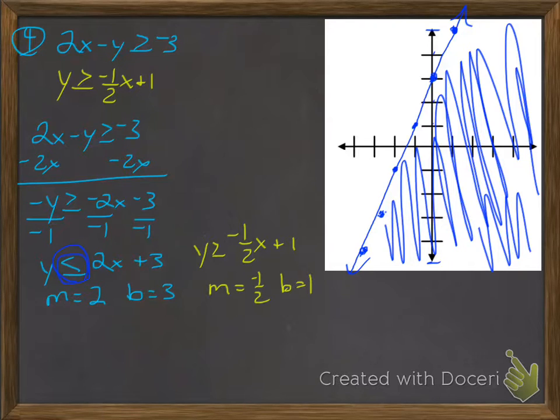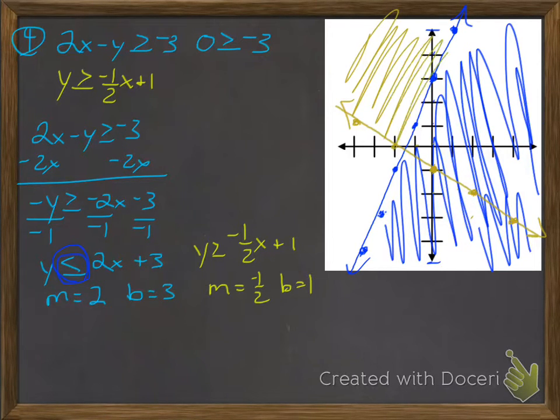If you go back and check with the original, you would check 0 is greater than or equal to negative 3, which is true. So that point should be in the shaded region. My other one, I have my yellow one now. Y-intercept at 1, my slope is negative 1 half. Down 1 over 2, down 1 right 2. From the y-intercept, up 1, left 2, up 1, left 2. So this is my line. And from this one, it's greater than, so I'm going to be shading above that line.